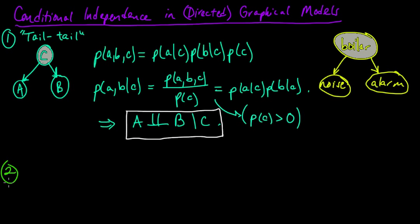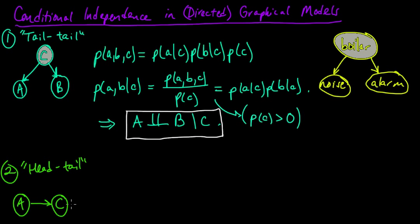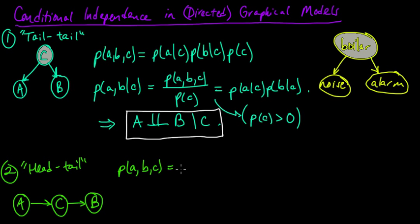If that was a tail-to-tail relationship, let's think about a head-to-tail relationship. We have A, and let's put C in the middle since we're going to think about conditioning on C. Then we'll put B over here. So A goes to C and C goes to B. This means that the distribution on A, B, and C can be written as the probability of A times the probability of C given A times the probability of B given C.